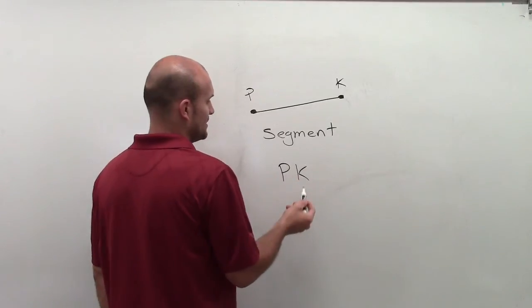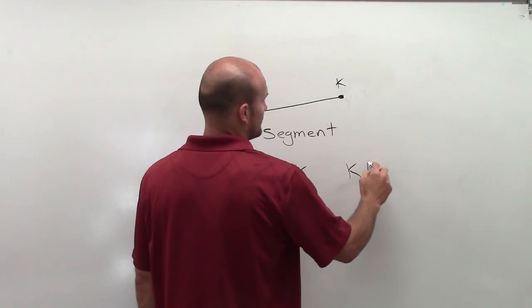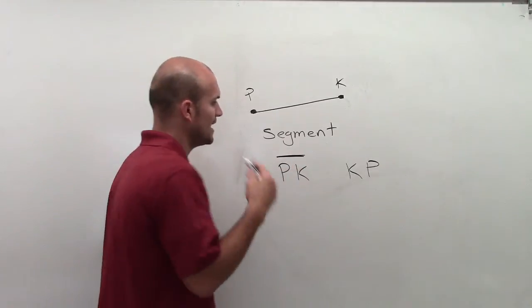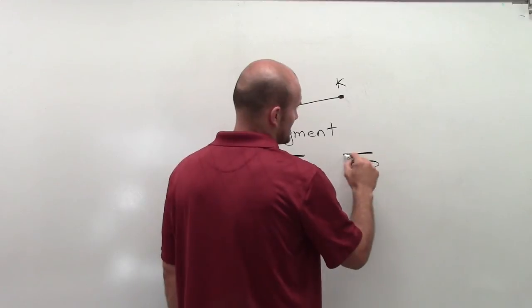When labeling a segment, we're going to do it very similar to a line. But now, rather than putting the arrows on the top of our line, we're just going to do a straight line on top.